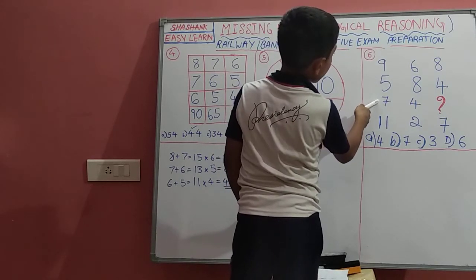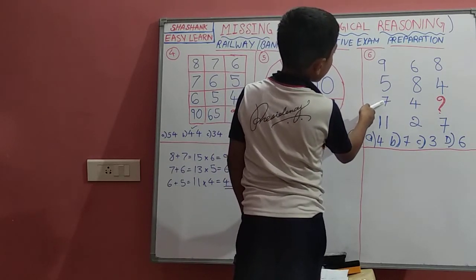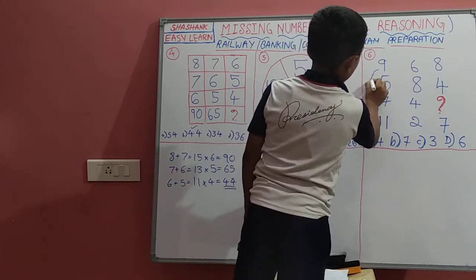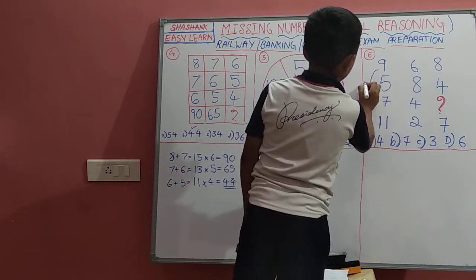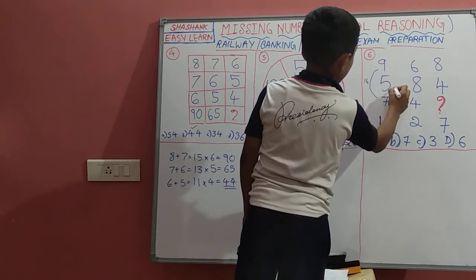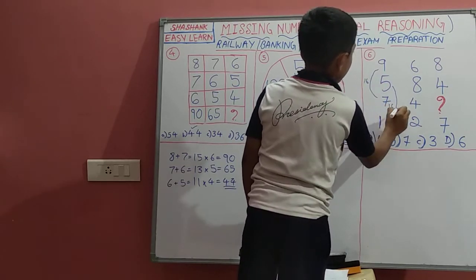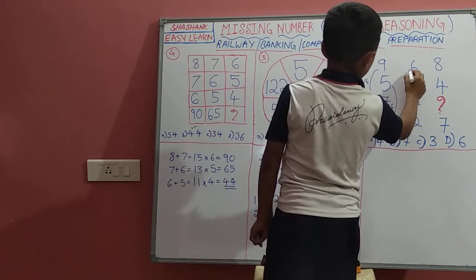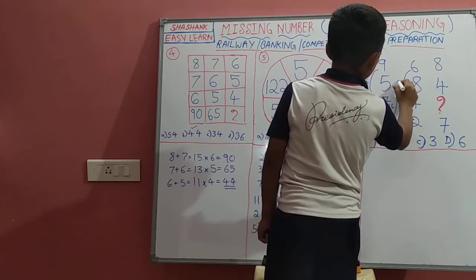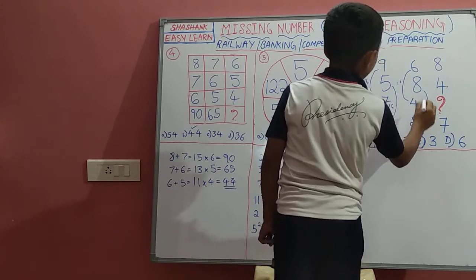9 plus 7 is 16, and 5 plus 11 is 16. So the pattern is that pairs of numbers sum to the same value. 6 plus 4 is 10, and 8 plus 2 is 10.